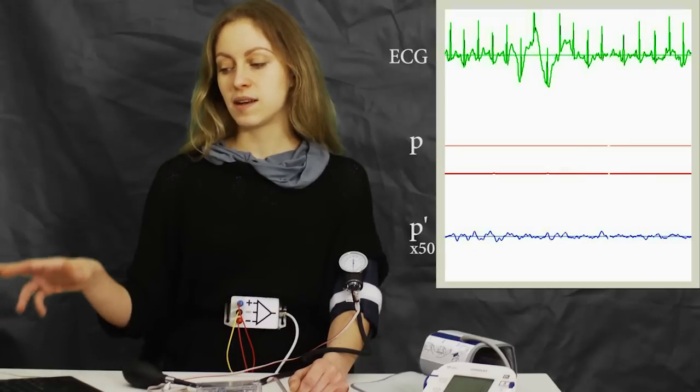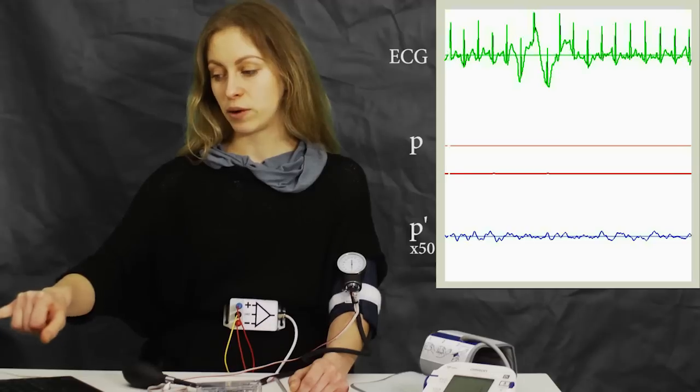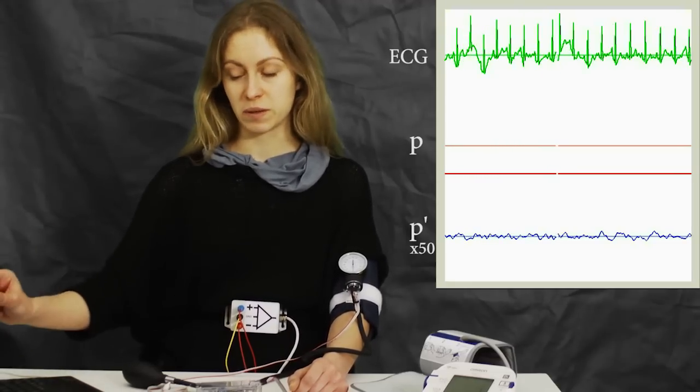If we look at the screen, we see that my absolute pressure is depicted in the middle trace, the red one, and the lower trace, the blue one, shows the corresponding changes to my pressure.